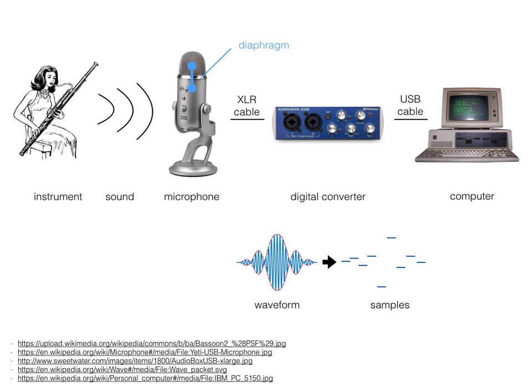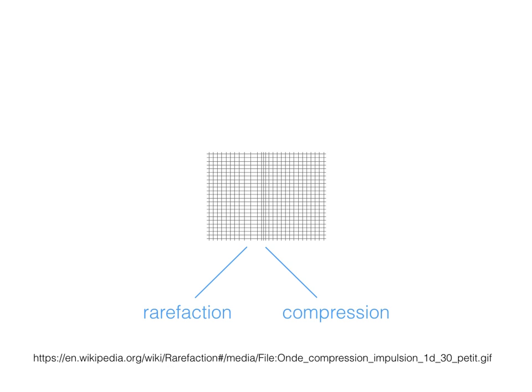Finally, the converter sends the array of integers representing the sound into the computer. Physical sounds have two areas: compression and rarefaction.